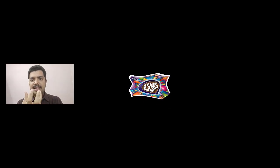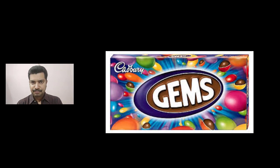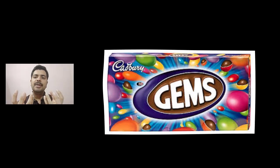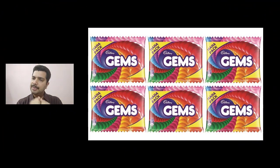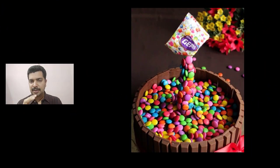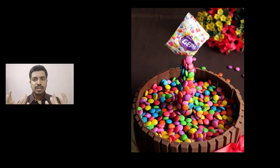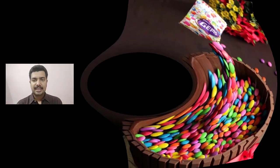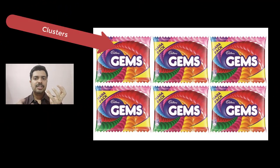To make it simple, imagine you buy gems packets of rupees 10. Those gems packets are called clusters. The cluster might look alike — two gems packets might look alike — but inside the gems packets, the respondents or the sweets inside are of different colors. So they look alike on the outside, but inside they are different. This one gems packet is called a cluster.